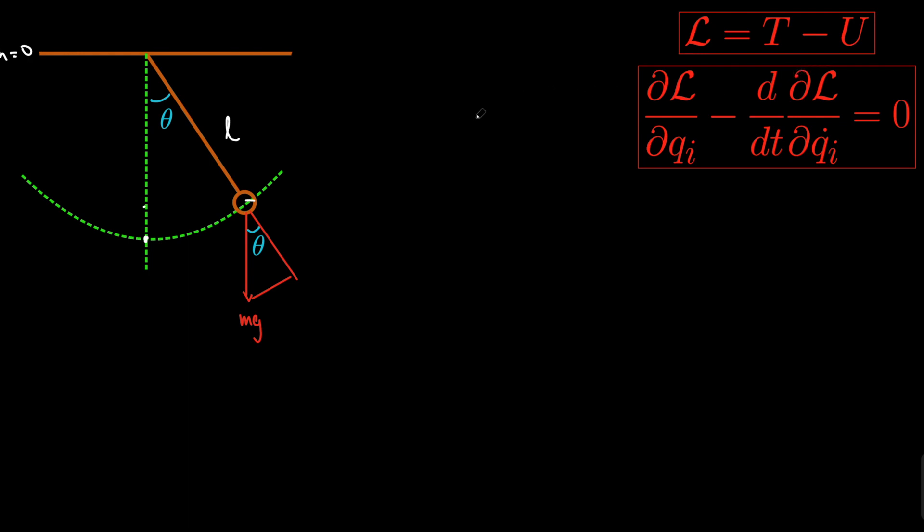So what we're going to do first is we're going to compute the Lagrangian, right? And then we're going to use this Euler-Lagrange equation of motion to compute the equation of motion. And here you have q_i, which could be, for example, if you had spherical coordinates, it could be r, theta, phi. The equation could be x, y, z, it could be a lot of things, it could be coupled.